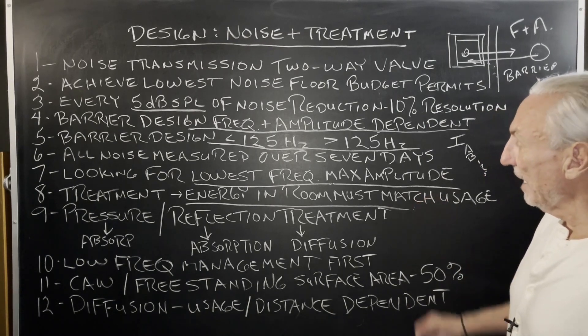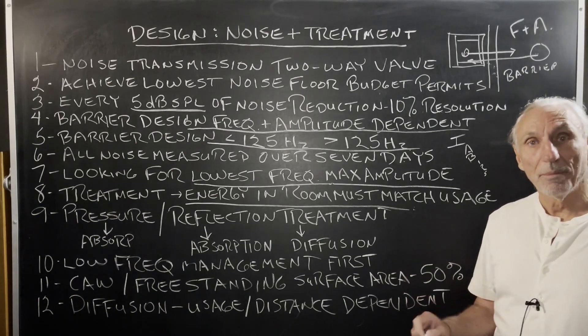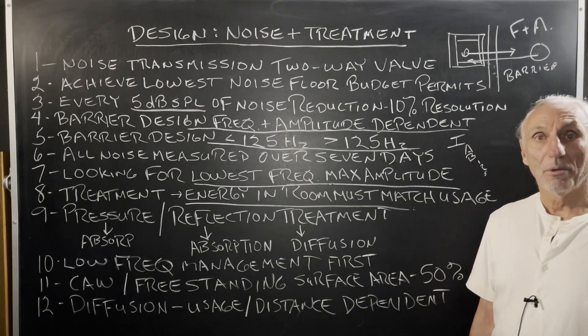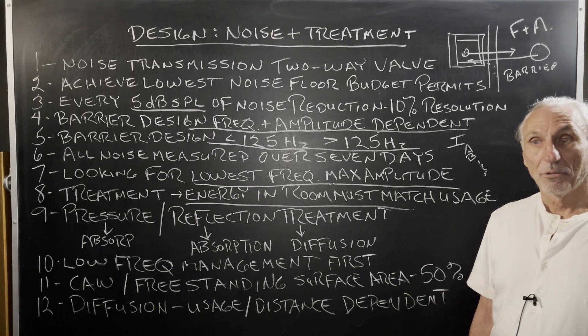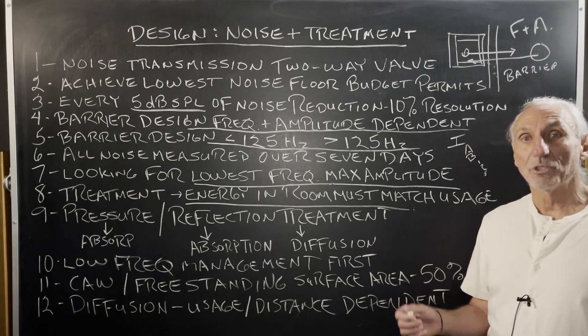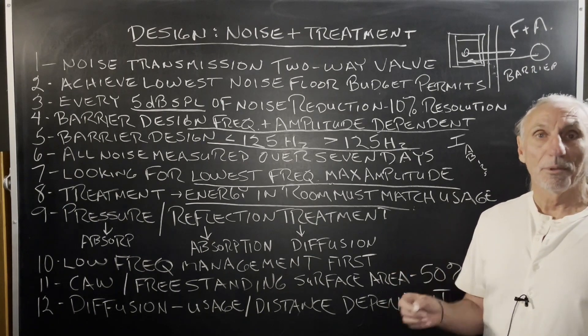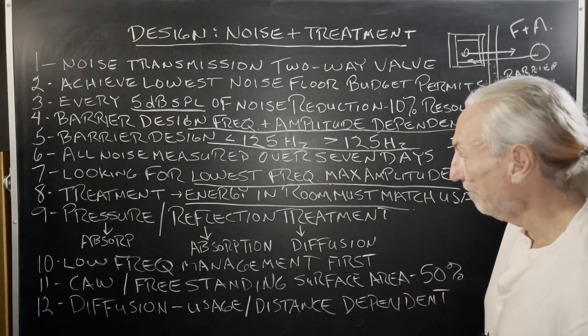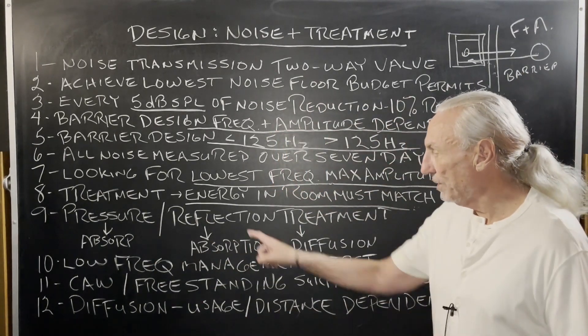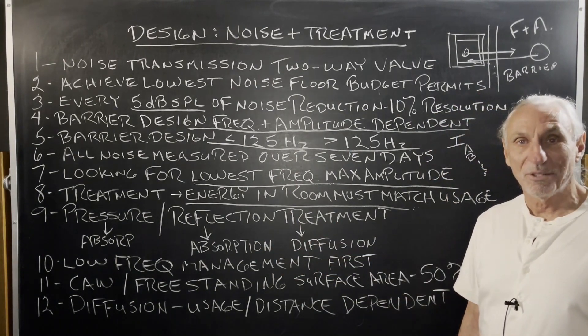We must manage the energy and the treatment in the room to match the usage. Every usage is different. A drum room has larger low-frequency requirements in treatment than a vocal room. Why? Voice doesn't go below 80 hertz on average for males. So drums go way lower. Kick drum 40-50 cycles. Tom, snare. So completely different sources of energy require completely different treatment types and most important, completely different surface area requirements. With pressure, low-frequency energy, we use absorption. Reflection treatment, we have absorption and diffusion. We have two options here. But low-frequency energy is not ever diffused. It's absorbed.